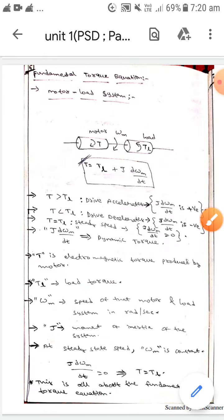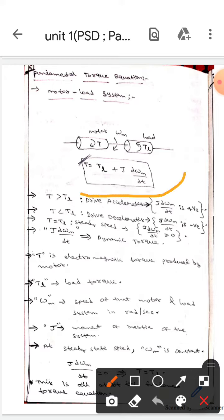And here the formula is T = TL + J × dωm/dt.